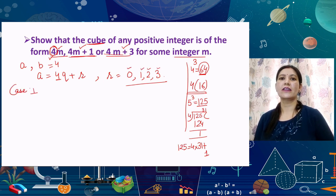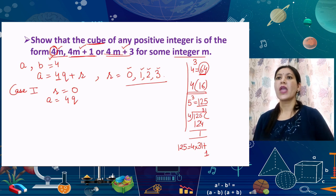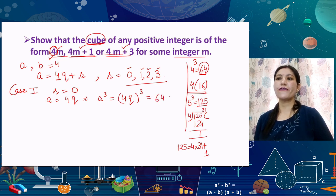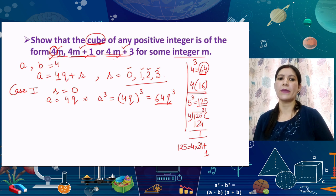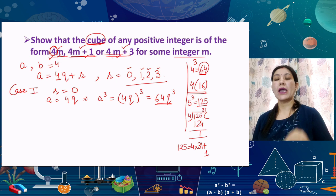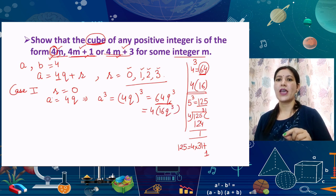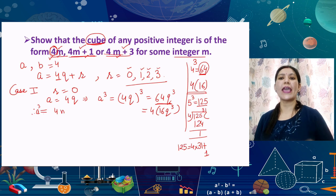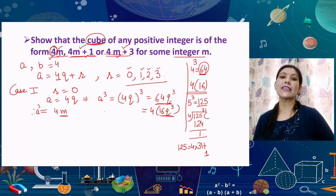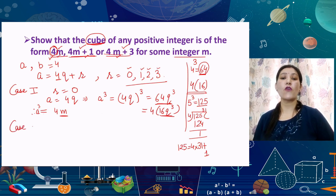Case 2: remainder is 1. Then A = 4Q + 1. Cubing both sides using the identity (A+B)³ = A³ + B³ + 3AB(A+B), we get A³ = 64Q³ + 1 + 3×(4Q)×1×(4Q+1) = 64Q³ + 1 + 48Q² + 12Q. We can take 4 common from 64, 48, and 12, giving A³ = 4(16Q³ + 12Q² + 3Q) + 1, which is in the form 4m+1.